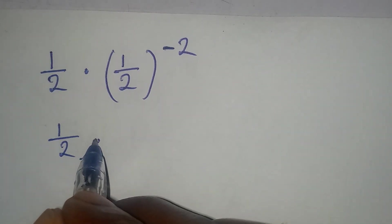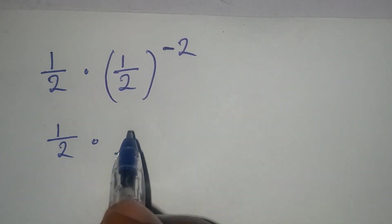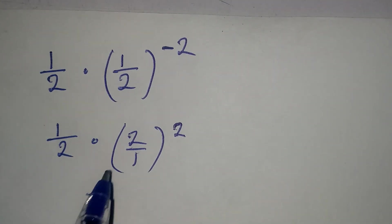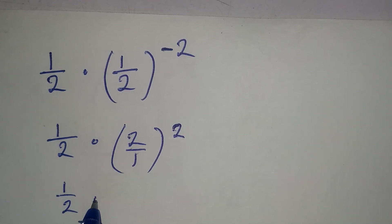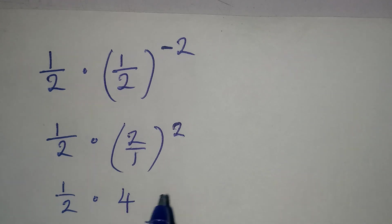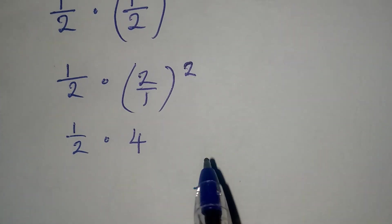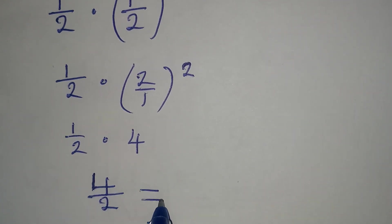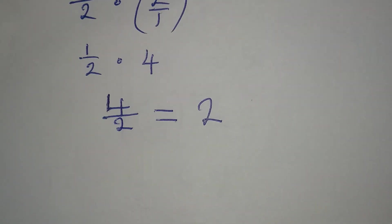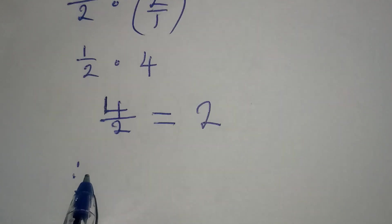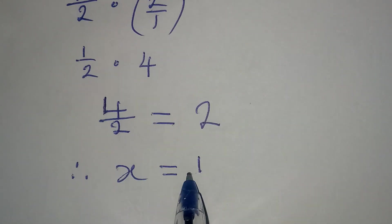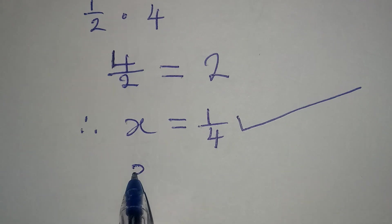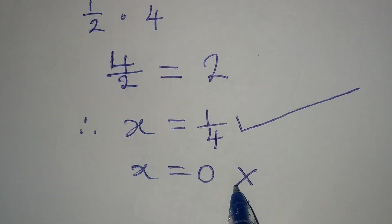We have 1 over 2 multiplied by... To remove the negative exponent, we have 2 over 1 raised to the power of 2, which is 2 squared equals 4. So we have 1 over 2 multiplied by 4, giving us 4 over 2, which equals 2 — and that is what we have on the right-hand side. Therefore x equal to 1 over 4 satisfies the equation, and x equal to 0 does not satisfy the equation.